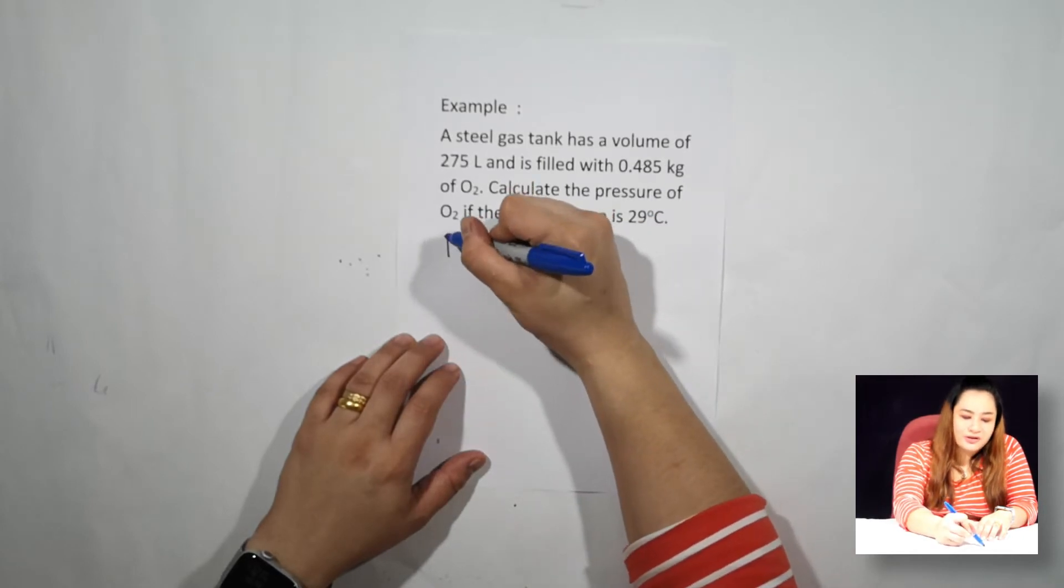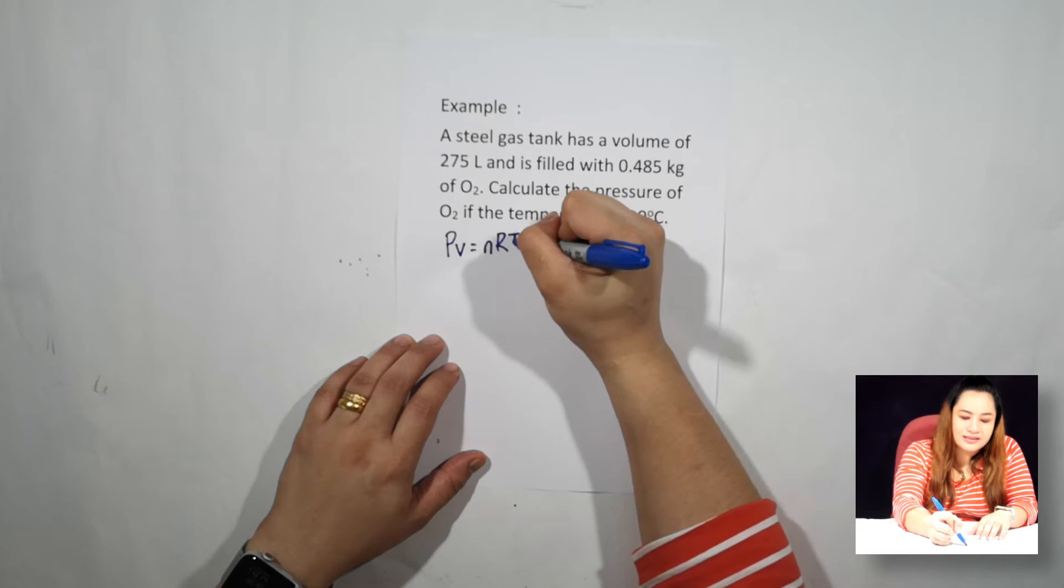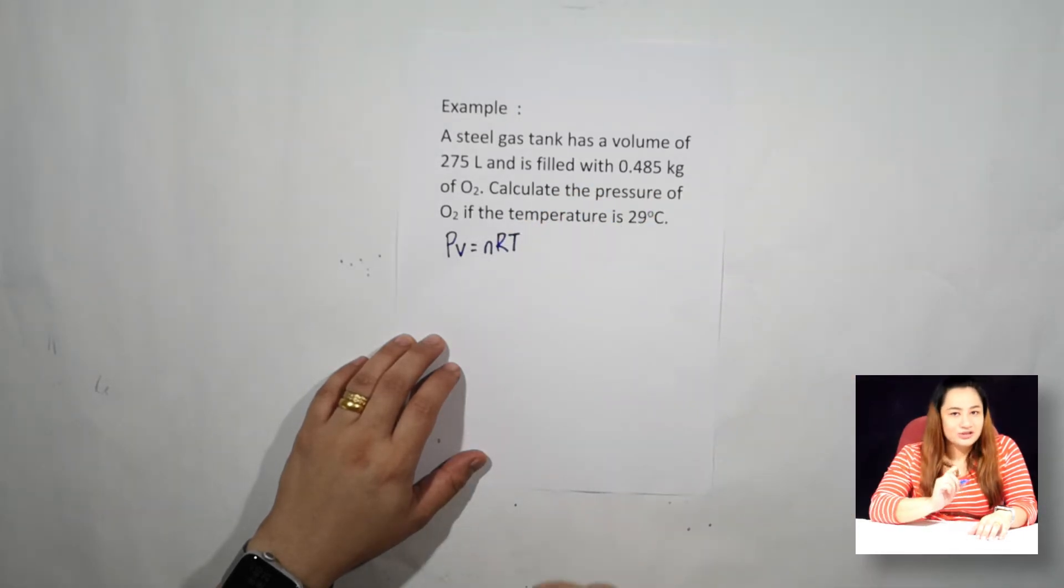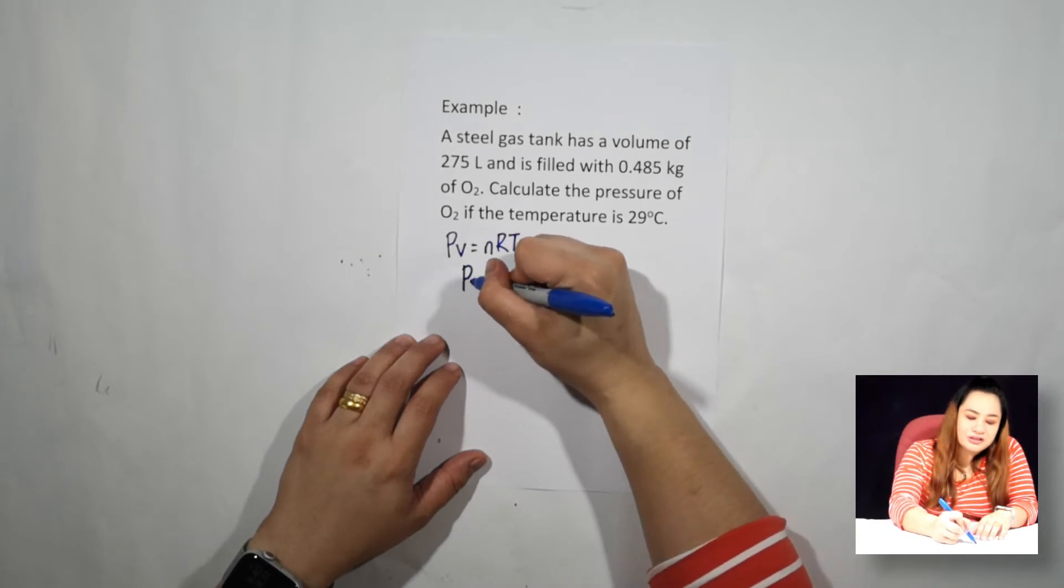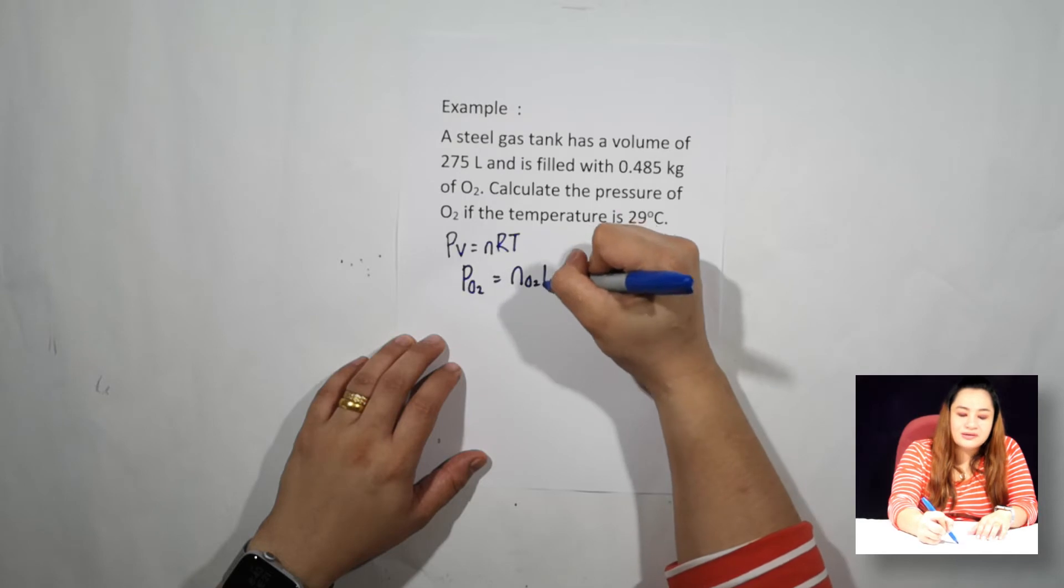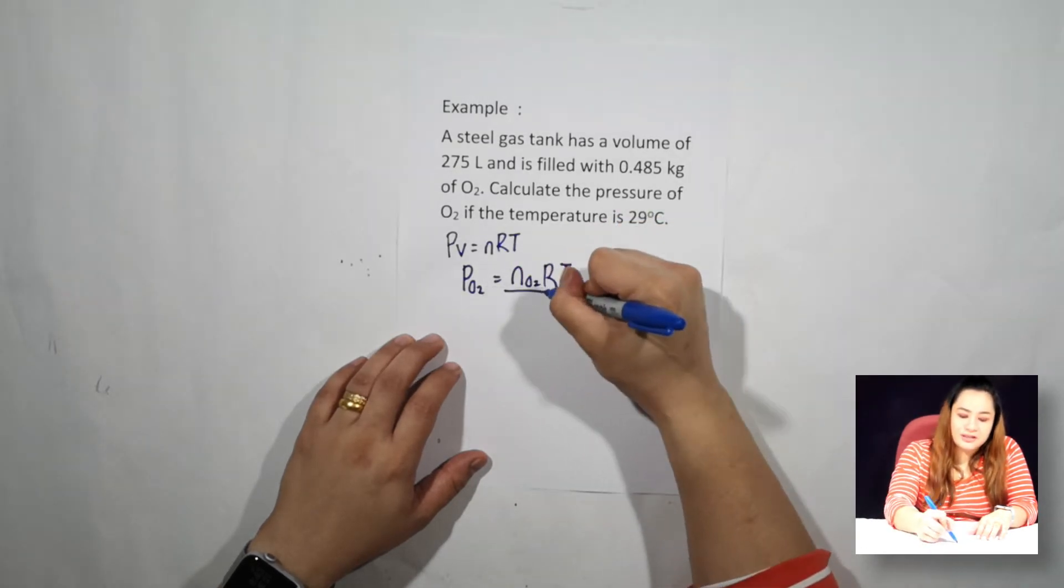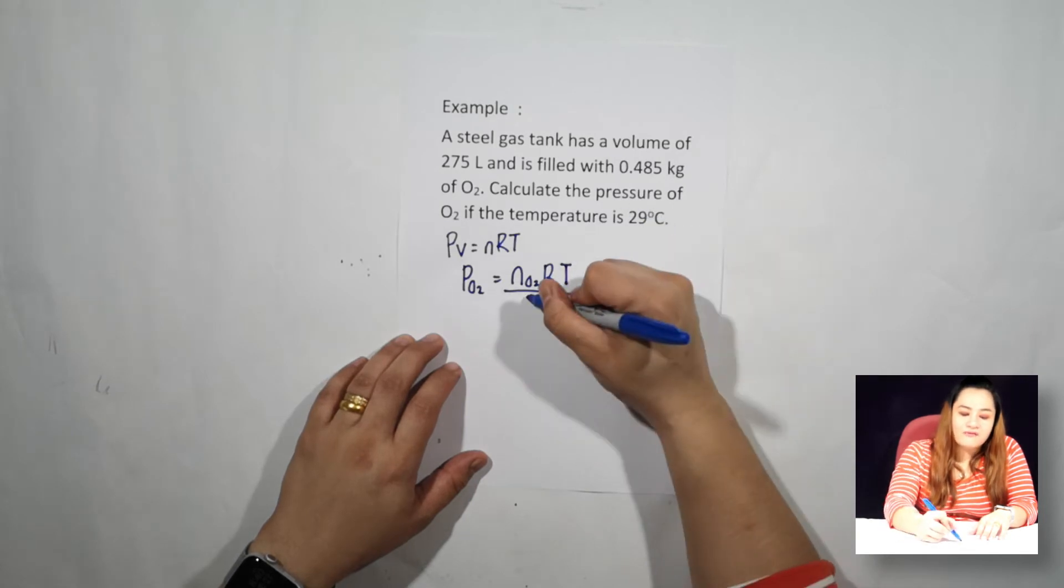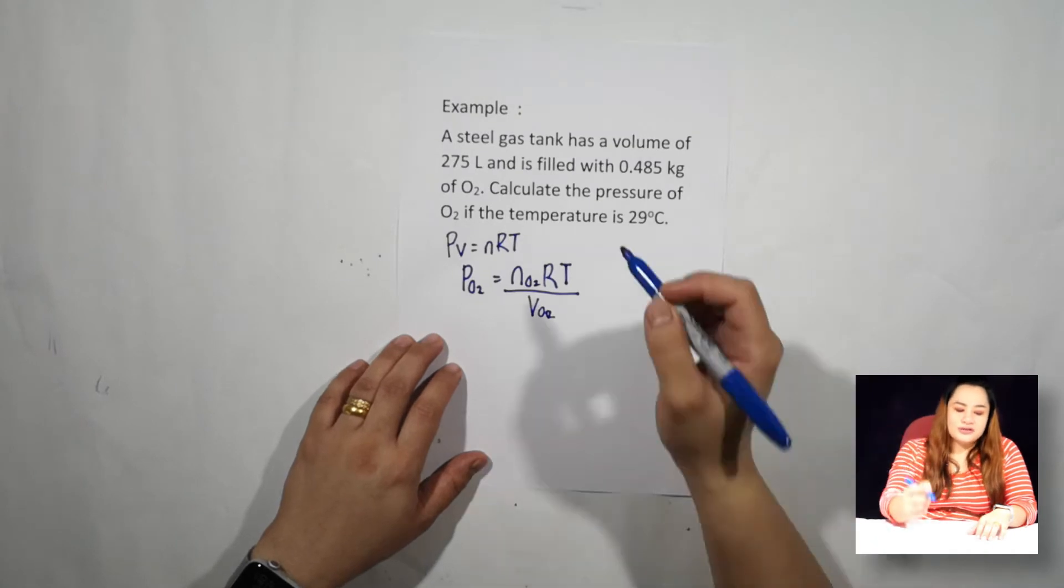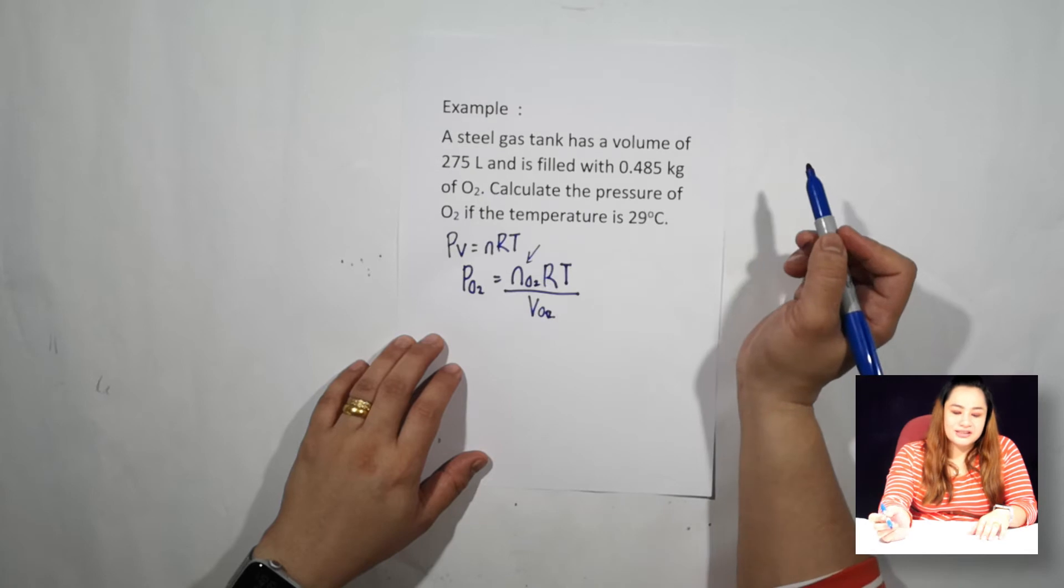Okay, so we can use formula PV = nRT. So the question asks you to find the pressure of the oxygen. So the pressure of the oxygen will be number of moles of oxygen times R times the temperature over volume of your oxygen.